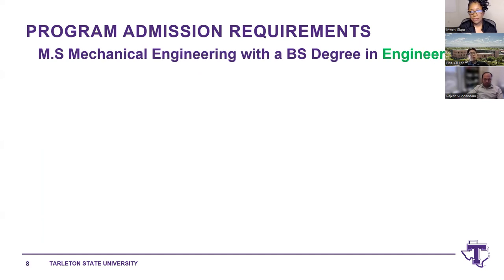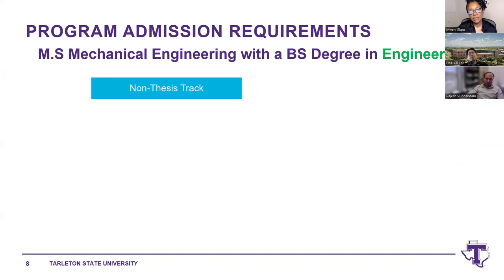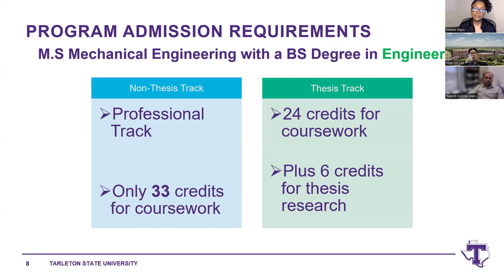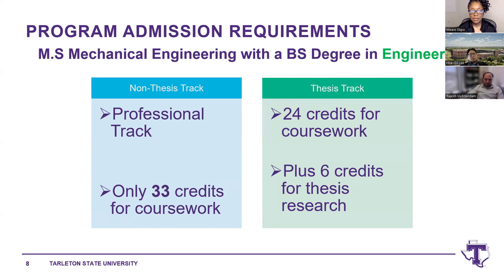Students with an engineering degree or relevant engineering degree are eligible to start the first semester without leveling courses. They have the flexibility to choose between two options: non-thesis and thesis. The non-thesis track is more of a professional track — no research is required, and students take 33 credit hours of coursework. The thesis track requires 24 credit hours of coursework, with six core courses, meaning 18 credit hours for coursework and six hours for thesis research.